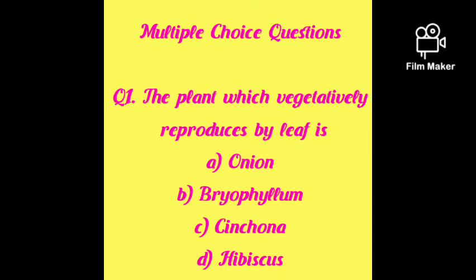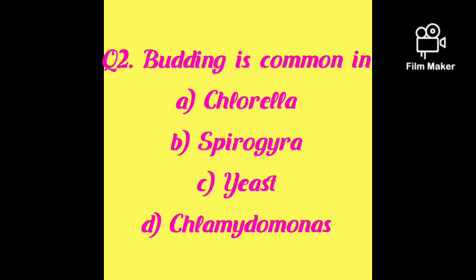Vegetative reproduction by leaf is shown by bryophyllum — option B. Next question: budding is common in which organism — chlorella, spirogyra, yeast, or chlamydomonas? Budding is the sprouting out of young ones from the body of the parent. The correct answer is yeast, option C. Yeast is a category of kingdom fungi.